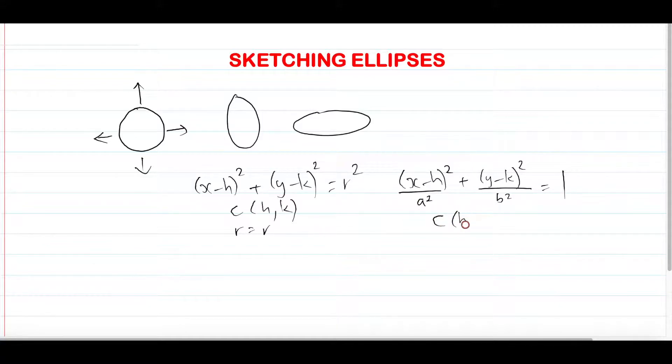The center in this case is still h,k, no difference. Of course though, the radius isn't r anymore. Our radius for an ellipse, we have two radii, and that would be your a value and then you also have your b value. So not a², not b², it's just the a and the b. That's your horizontal radius for a and that's your vertical radius for b.